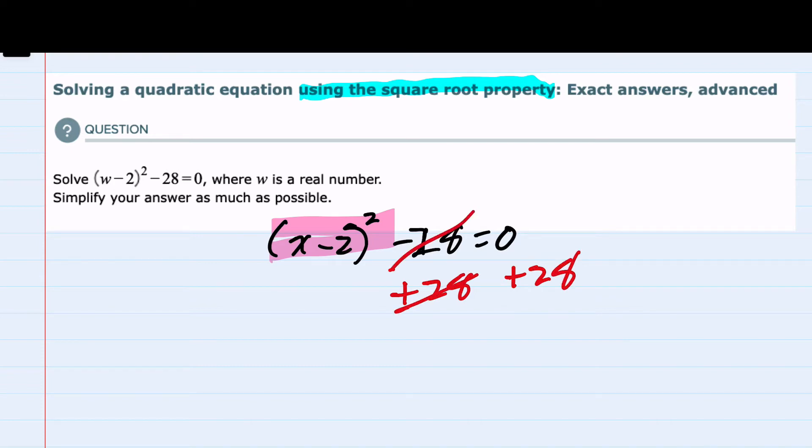Canceling it on the left would leave us just the x minus 2 quantity squared, and on the right hand side, now a positive 28.